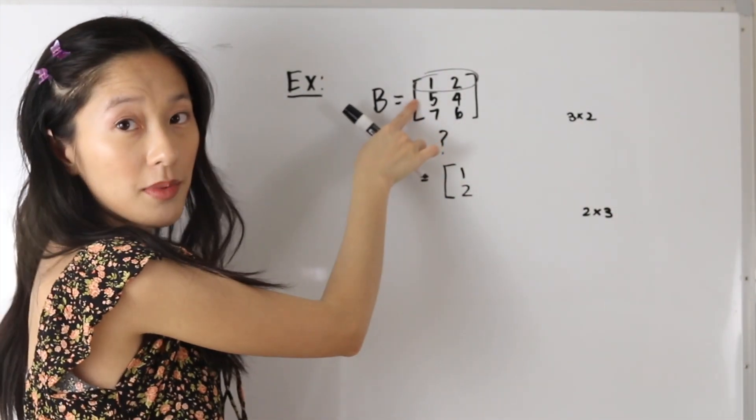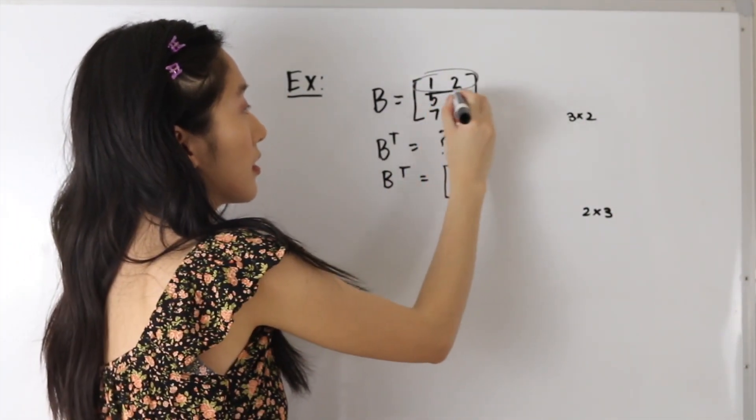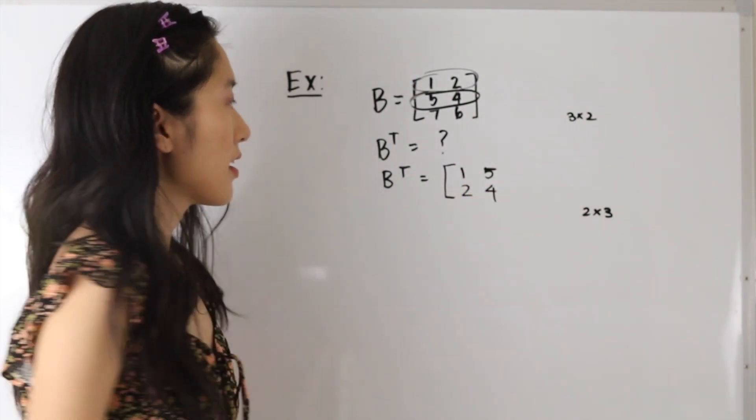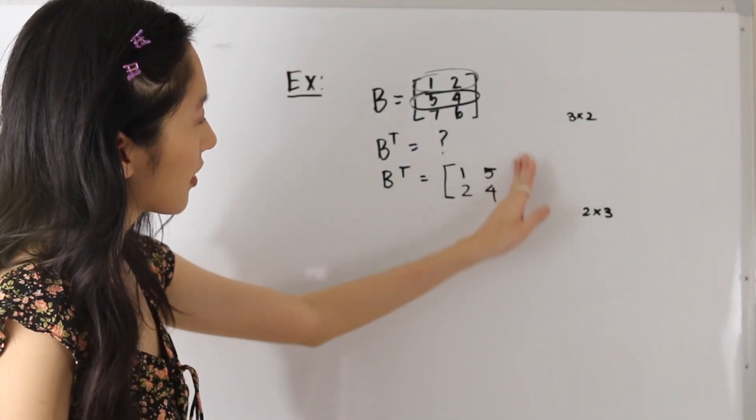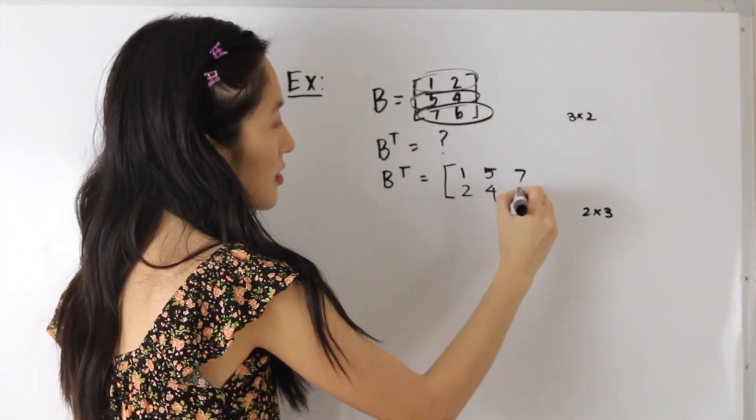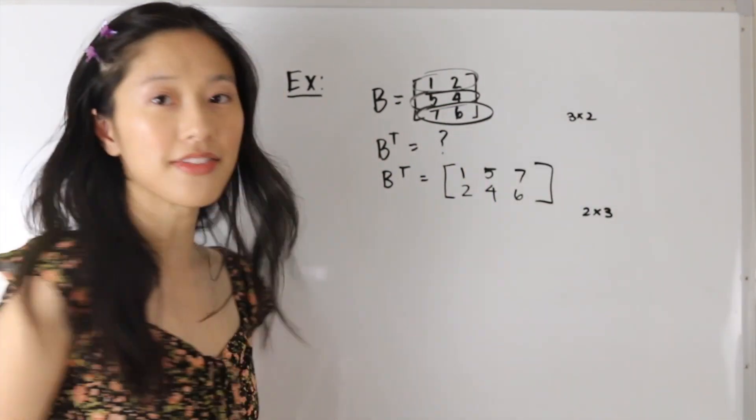And then for our next column, we will be getting 5 and 4. And then for our last column here, we will have 7 and 6. And that's our final answer.